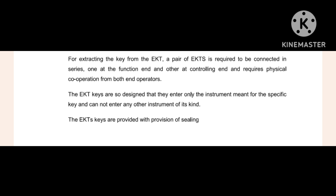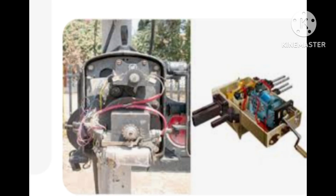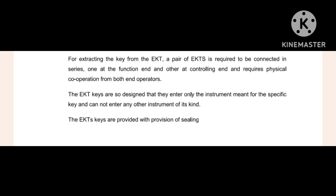The EKT keys are so designed that they enter only the instrument meant for the specific key and cannot enter any other instrument of its kind — just like home or shop keys, where one key cannot open another lock. So one EKT key cannot be inserted in another equipment. This is the interlocking between the two, providing protection so that unauthorized operation or operation of one point with another EKT cannot occur. That protection is taken care of by the design of the keys.